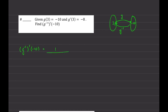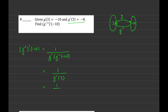Before doing anything, write: (g⁻¹)'(−10) = 1 over g'(g⁻¹(−10)). Notice all letters are the same — we're only dealing with g. Now, g⁻¹(−10): g inverse acts on the output of g, so if we plug −10 into g inverse, we go back to 3. The problem becomes 1 over g'(3), and we were given g'(3) = −8. So the answer is 1 over −8, which is −1/8.